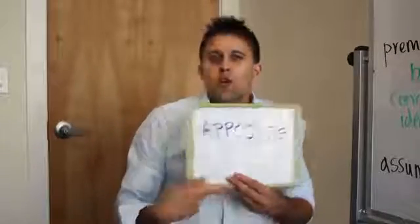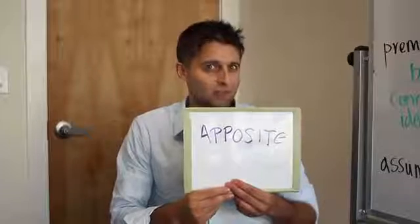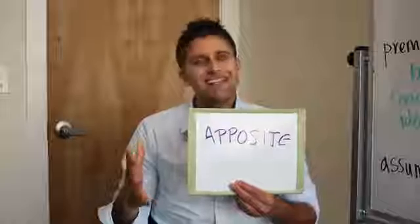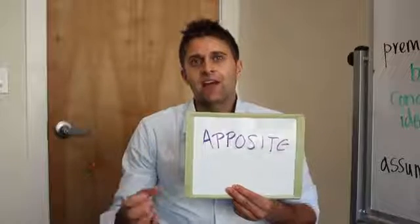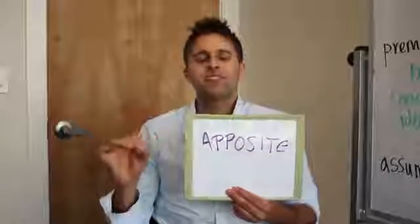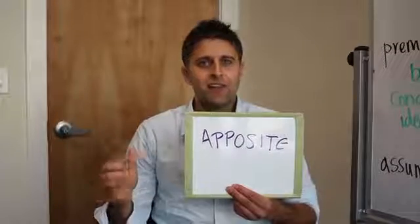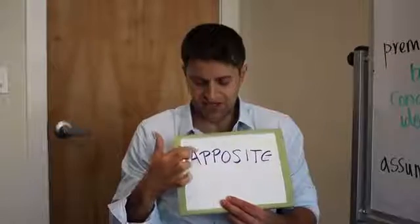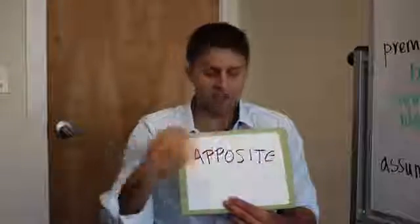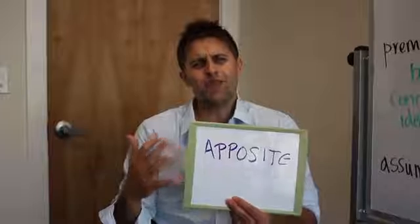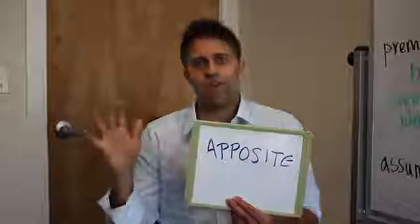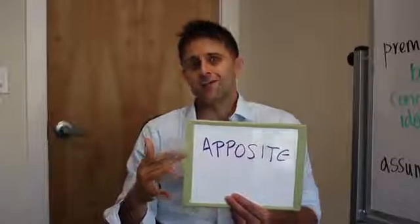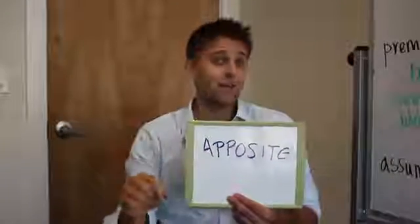Next and finally, we have 'apposite,' which sounds like 'opposite' but it is not opposite — it means apt or suitable. If something is apt, it is fitting. Apt comes up when someone says something that's just right given the situation. Apposite and apt are basically the same word; apposite is just much longer and more formal-sounding. The GRE likes it because it sounds like 'opposite,' but that's exactly what it doesn't mean — it means apt or suitable.